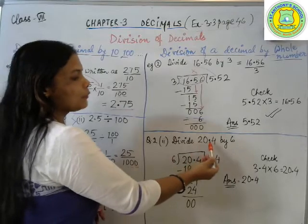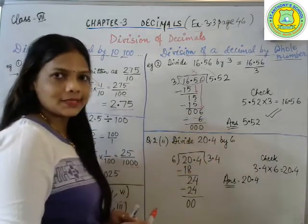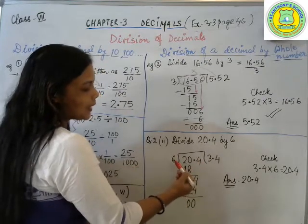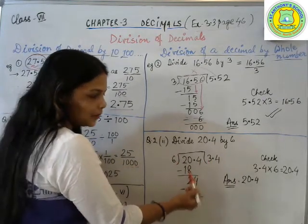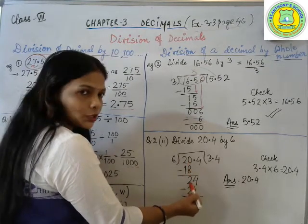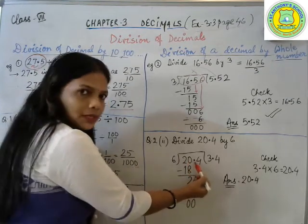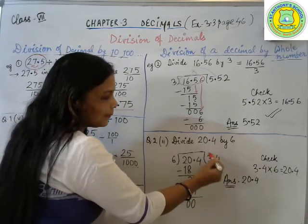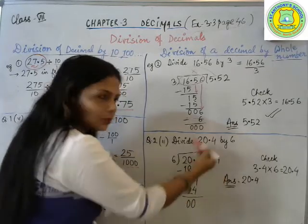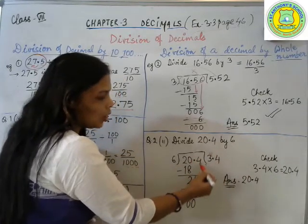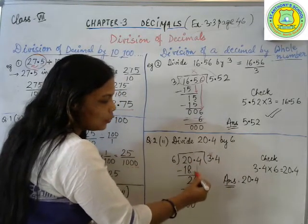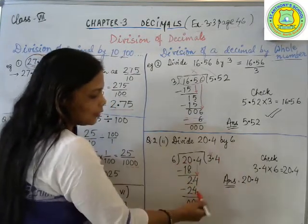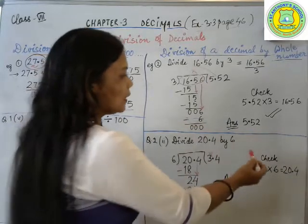Now I'm taking question number 2, subpart 2: divide 20.4 by 6. Same thing we will do. 6 and 20.4. So now how many times? Six threes are 18. 20 minus 18 is 2. Now decimal is there. What I will do? I will shift the decimal in the quotient area. Decimal will come in the quotient area. As soon as I shifted my decimal, I will copy the next number, that is 4. So my new number is 24.